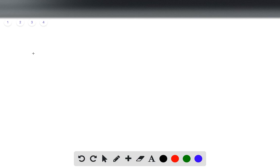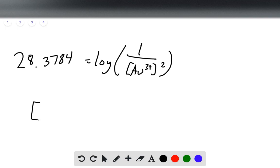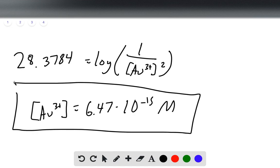When we multiply over our non-log terms, we end up with 28.3784 equals log of 1 over concentration of Au³⁺ squared. And that gives us a concentration of Au³⁺ of 6.47 times 10 to the -15 molar. And that is our final answer.